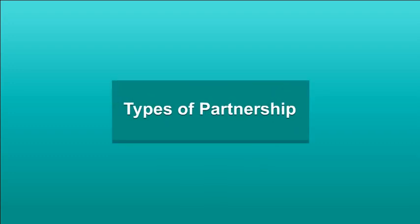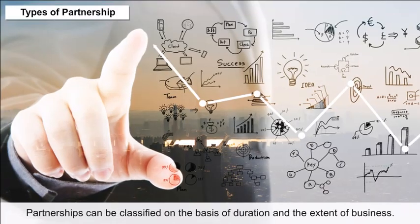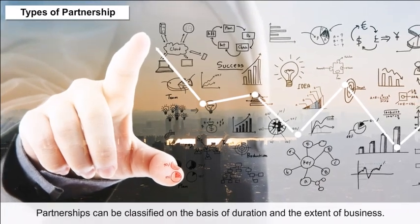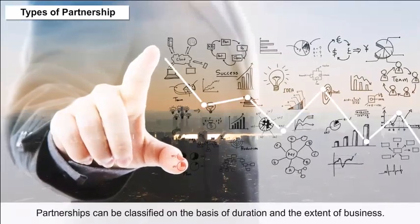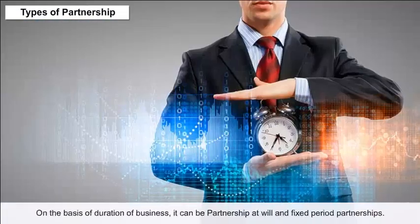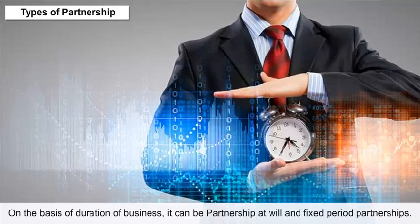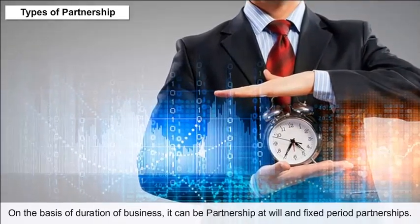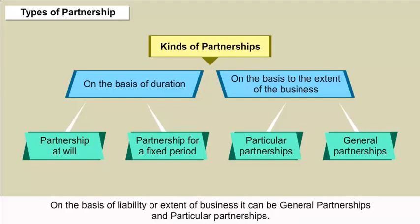Types of partnerships: Partnerships can be classified on the basis of duration and the extent of business. On the basis of duration, it can be partnership at will or fixed period partnerships. On the basis of liability or extent of business, it can be general partnerships or particular partnerships.